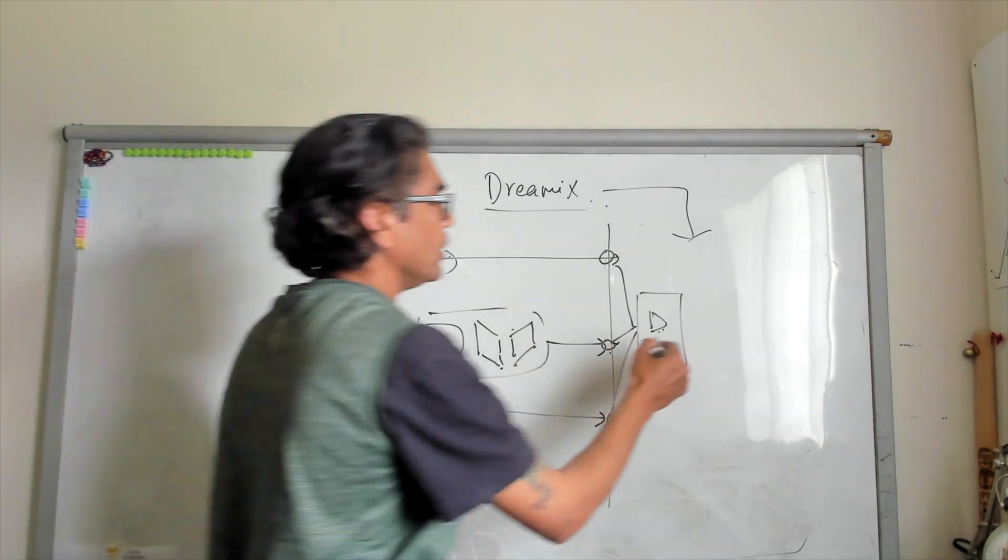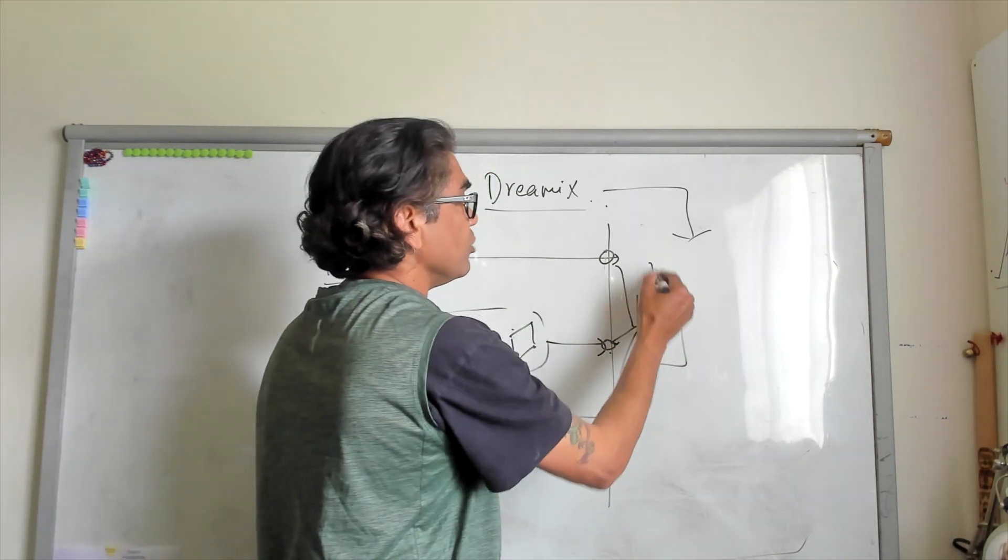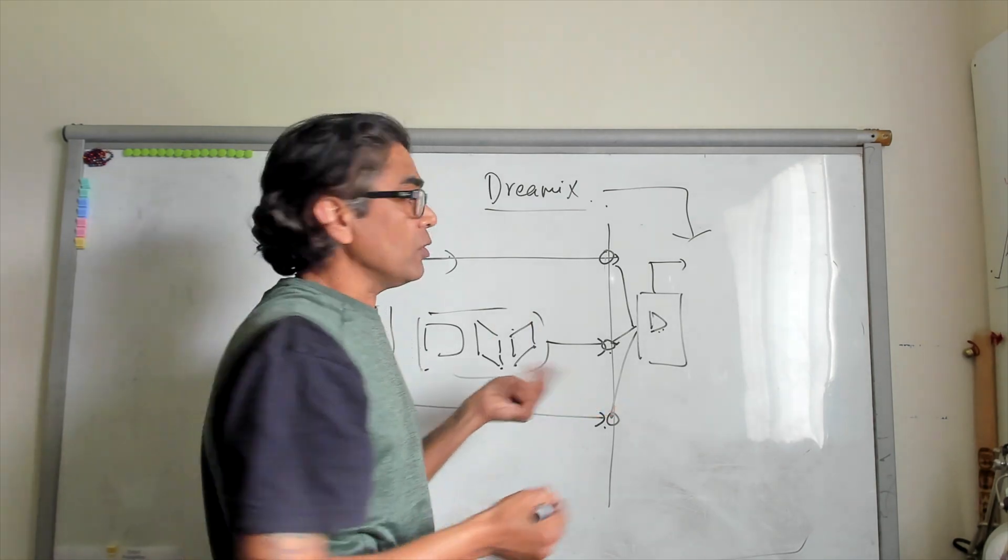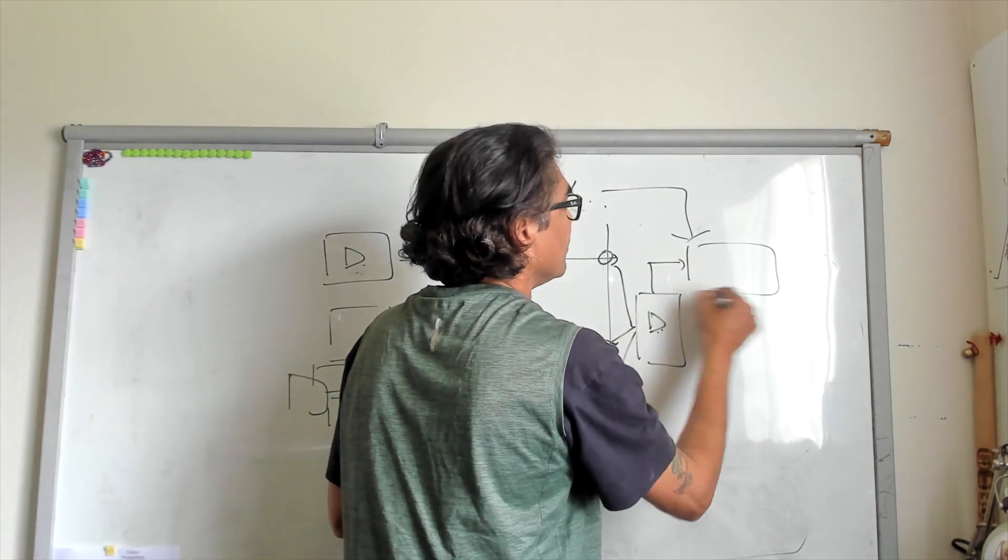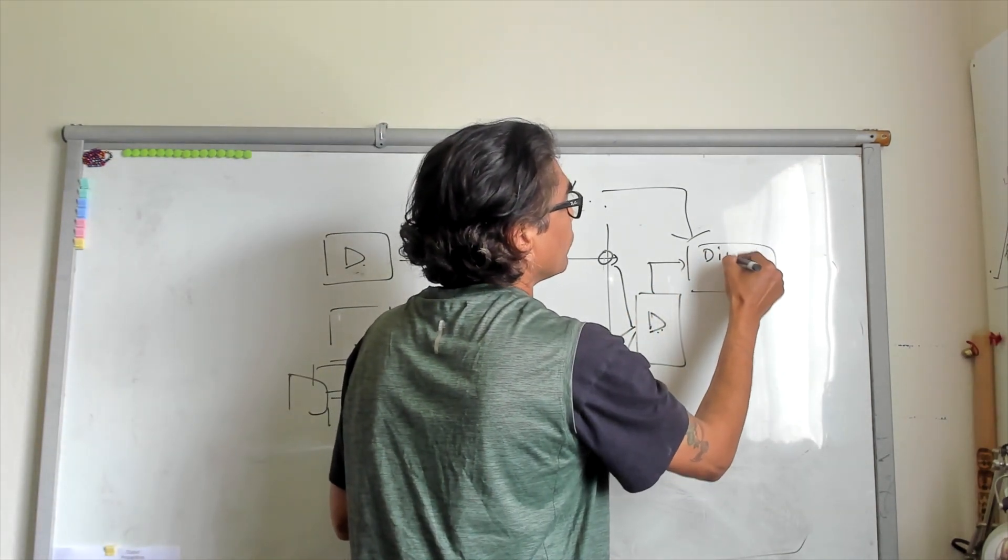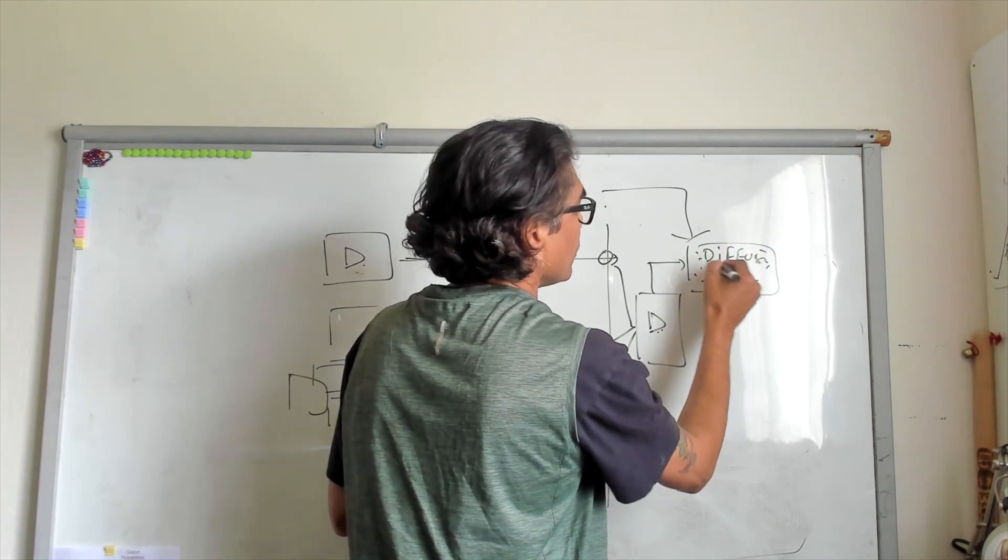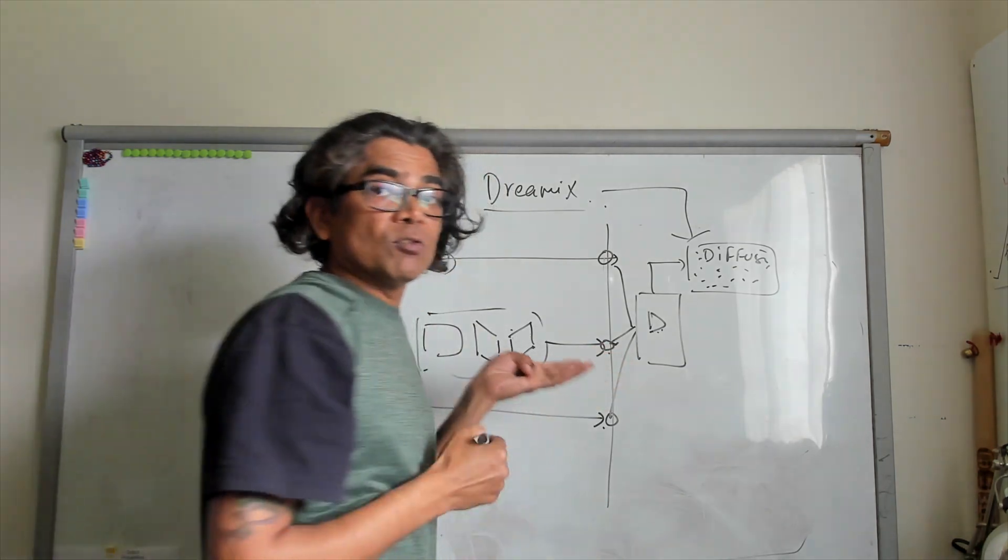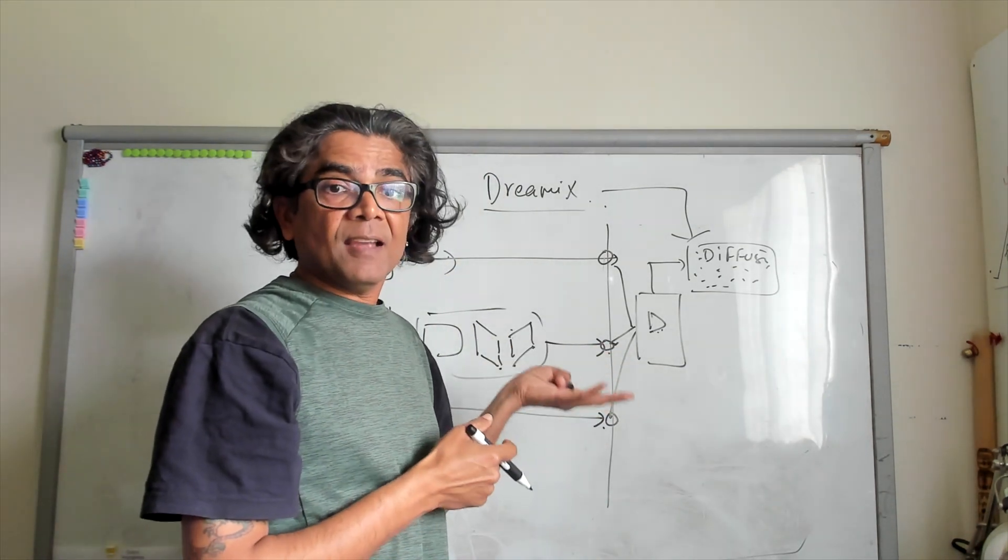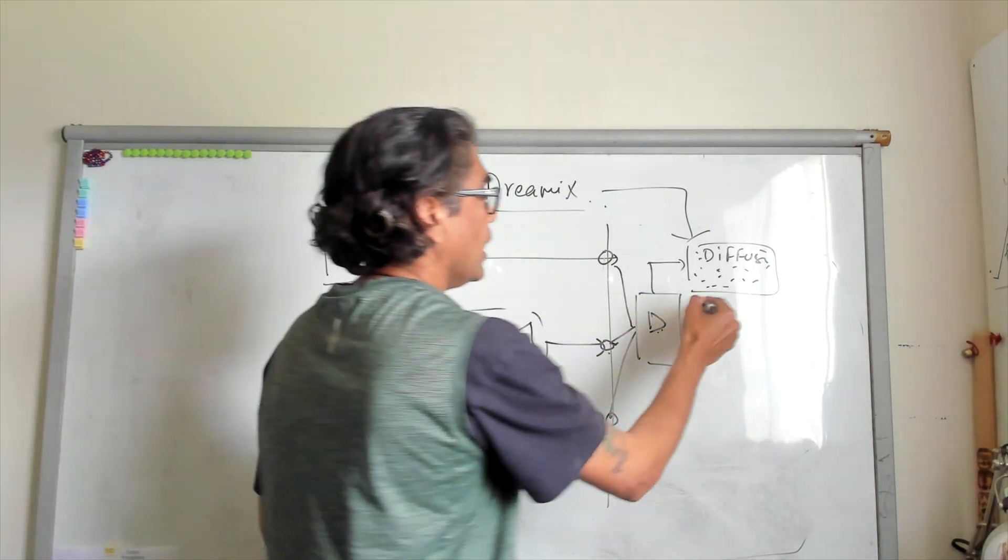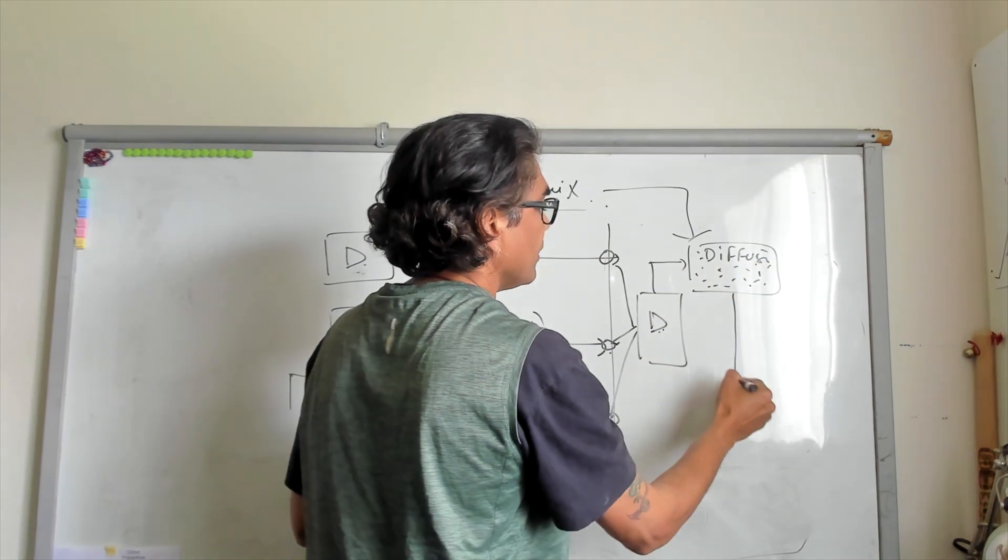Once you have that video, at the next step, Dreamix is actually a diffusion video editor. What it does is it adds the diffusion. And if you're adding the diffusion base, you're basically adding Gaussian noise in the source input. In this case, this is the image. Now diffusion has been added at this point.